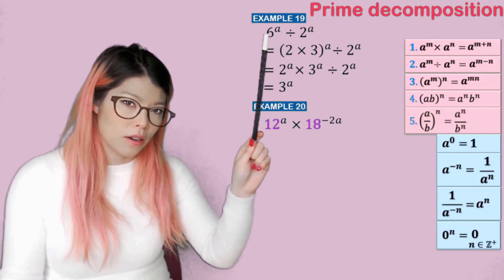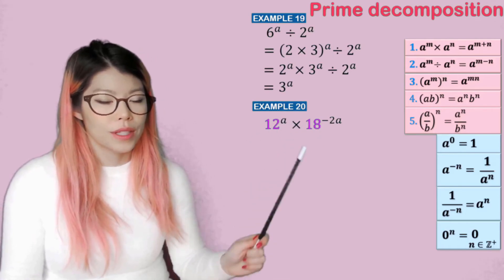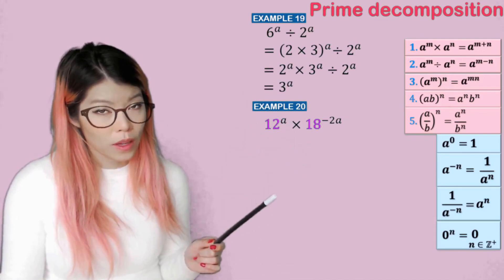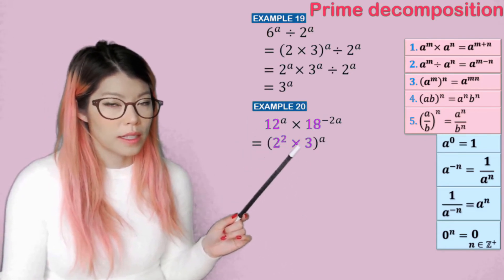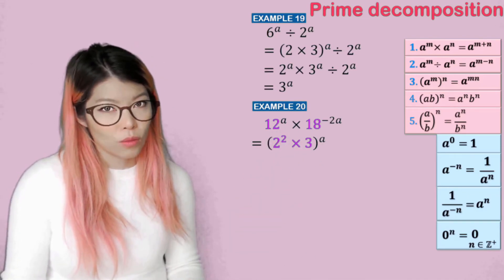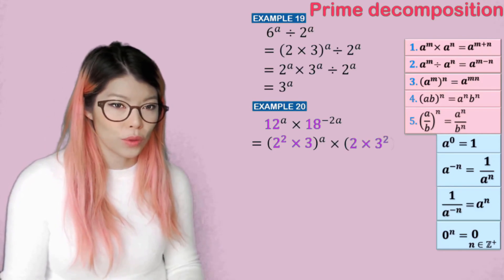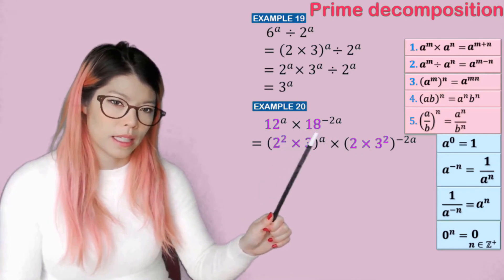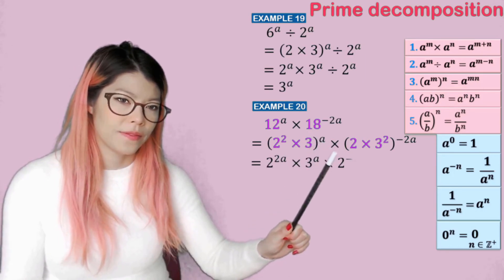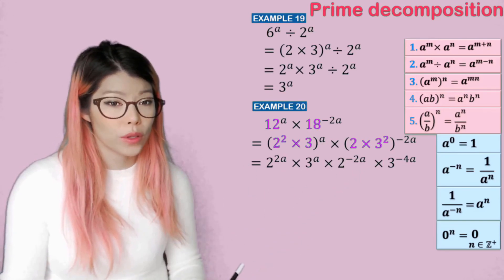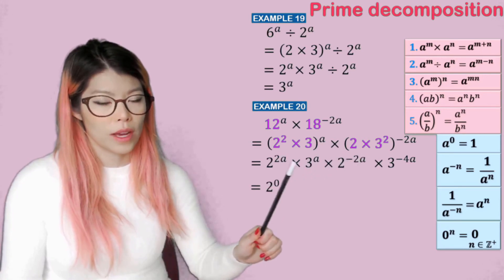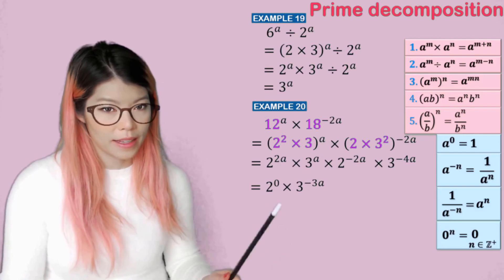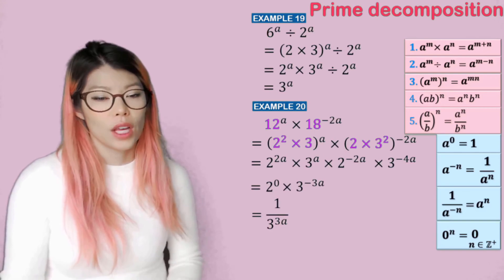Example twenty: twelve a times eighteen to the negative two a. Now that we can see the method of breaking numbers into prime factors, we apply that to something more challenging. Twelve is two squared times three, and eighteen is two times three squared. Expanding the powers: two to the 2a times three to the a, times two to the negative two a times three to the negative four a. Now adding the powers: two to the 2a plus negative 2a is zero, and three to the a plus negative four a is negative three a. So the answer is one over three to the power of three a.